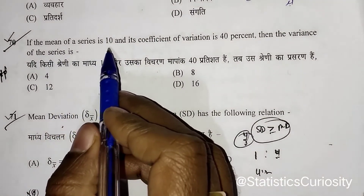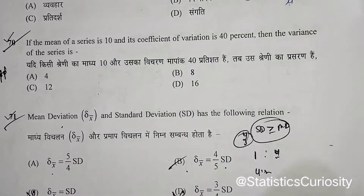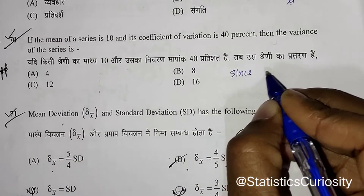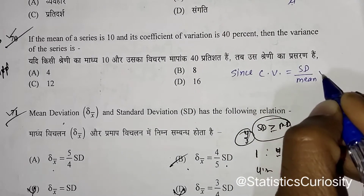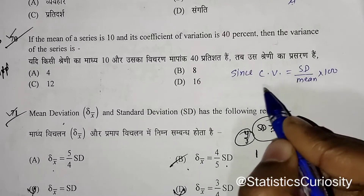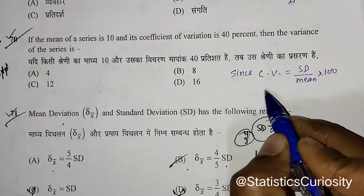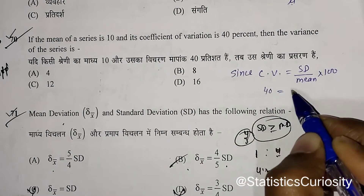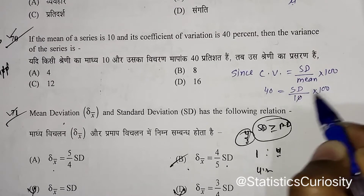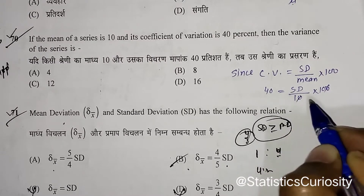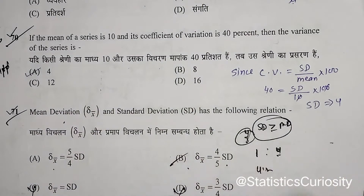Next question: if the mean of a series is 10 and the coefficient of variation is 40%, find the standard deviation. Using the formula CV = (SD / mean) × 100: 40 = (SD / 10) × 100, so SD = 40 × 10 / 100 = 4. The answer is 4. Option A is correct.